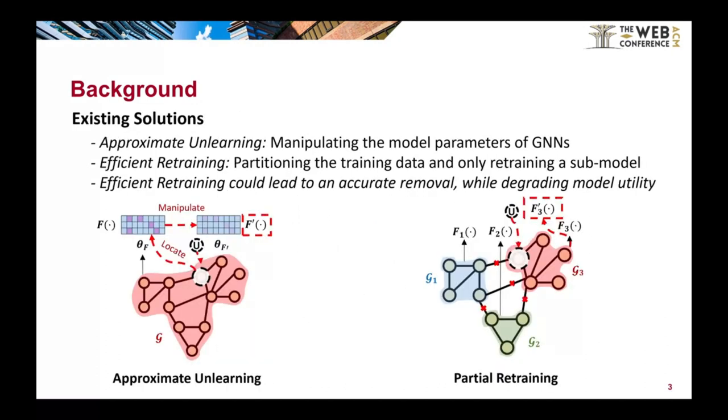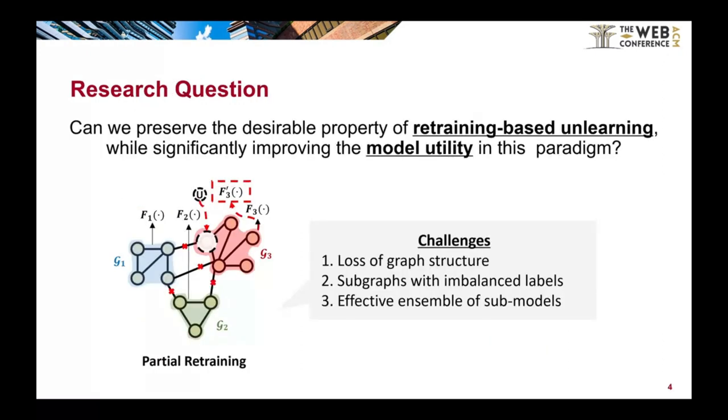The academic community currently explores two separate lines of research. The first one is Approximate Unlearning, which identifies and then mitigates the influence of unwanted data on model parameters. Another one is efficient retraining approaches, which involve partitioning the training graph to smaller subgraphs for independent submodel training. This allows for selective retraining of a small submodel to eliminate the data's effects. While recent literature has shown the removal guarantees of retraining-based methods, they can seriously degrade model performance due to the division of the graph.